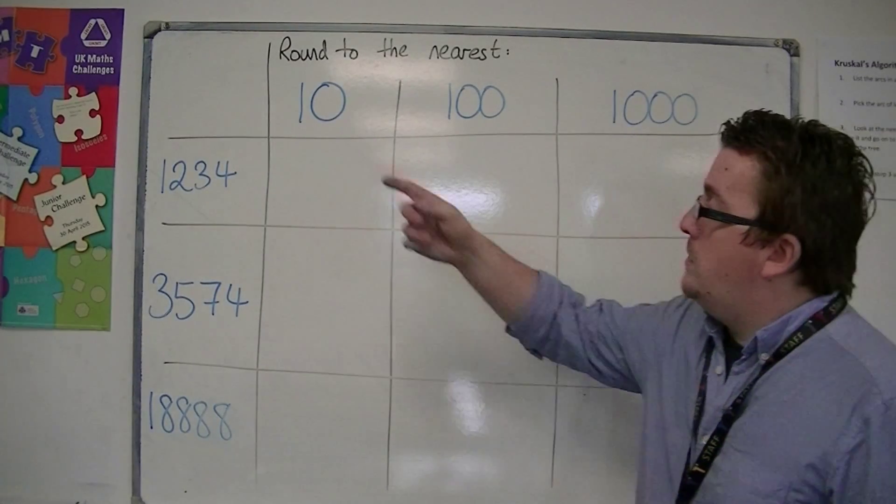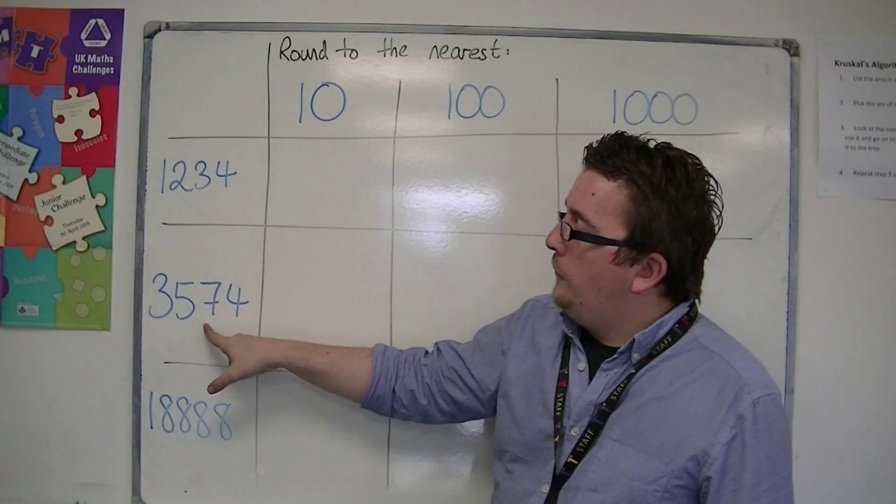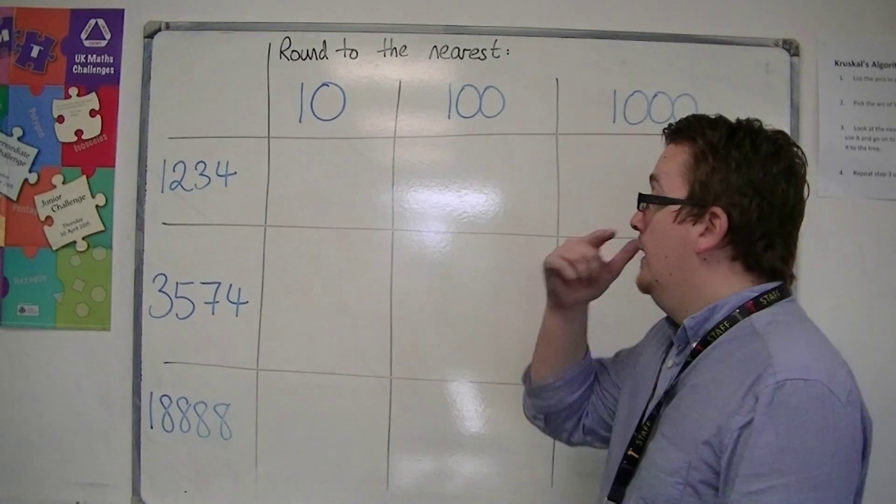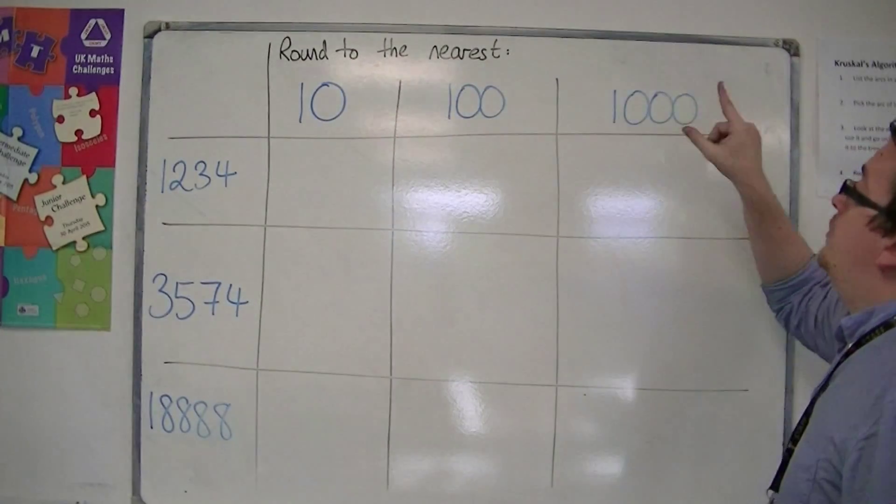So I'm looking at three numbers: 1,234, 3,574, and 18,888. And I'm going to round each one of these three to the nearest ten, hundred, and thousand.